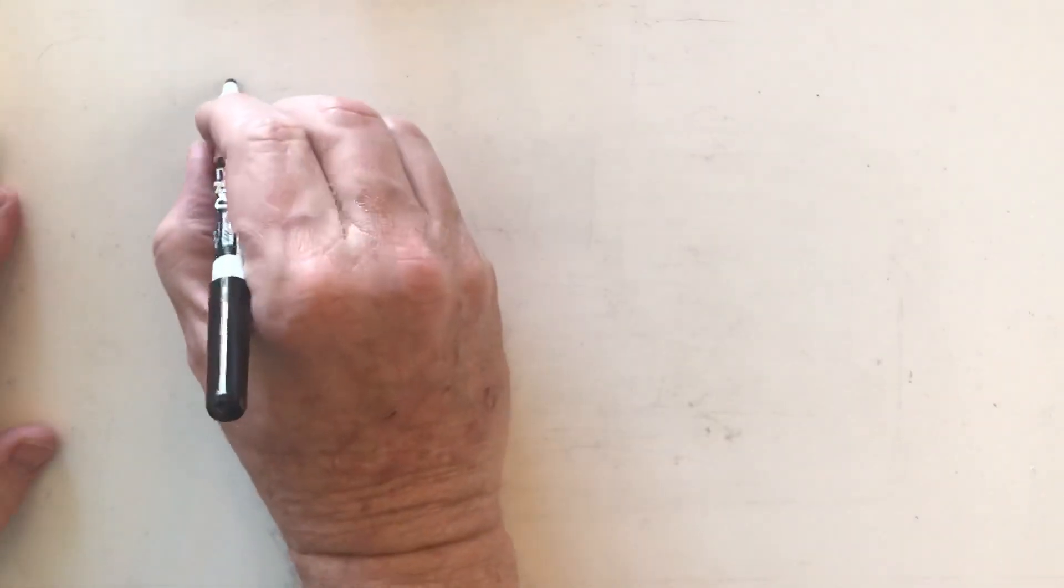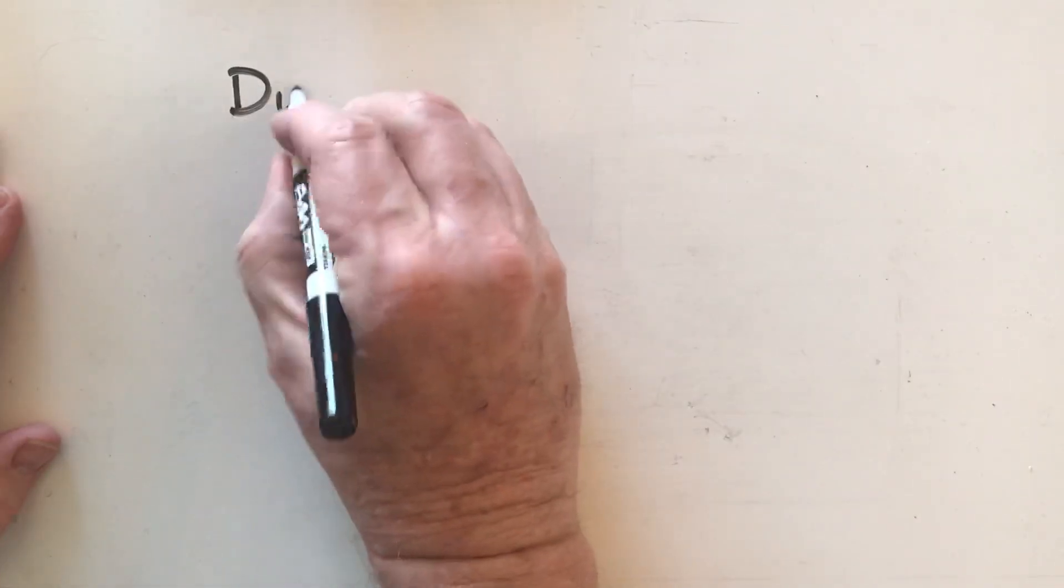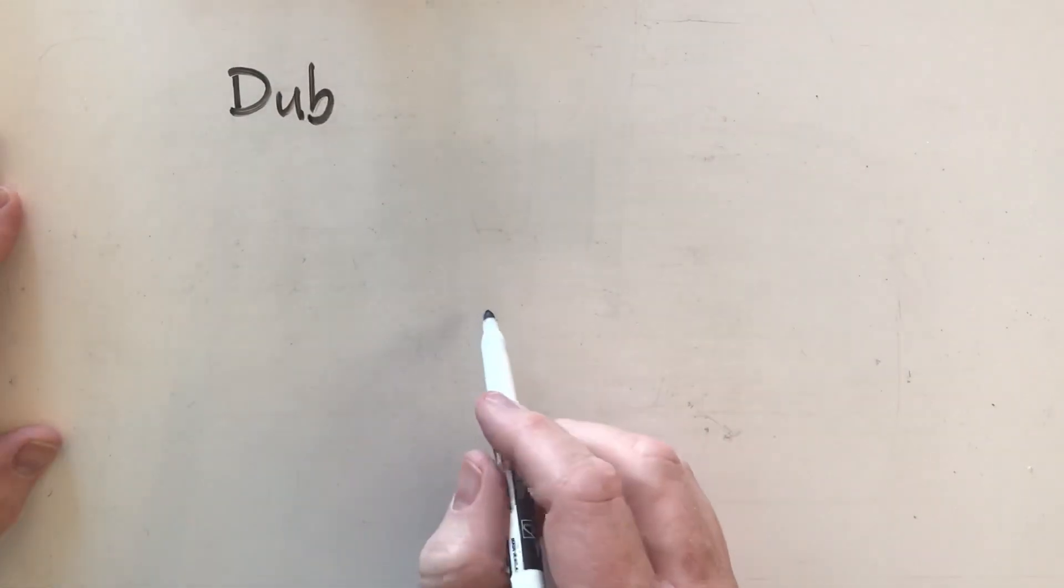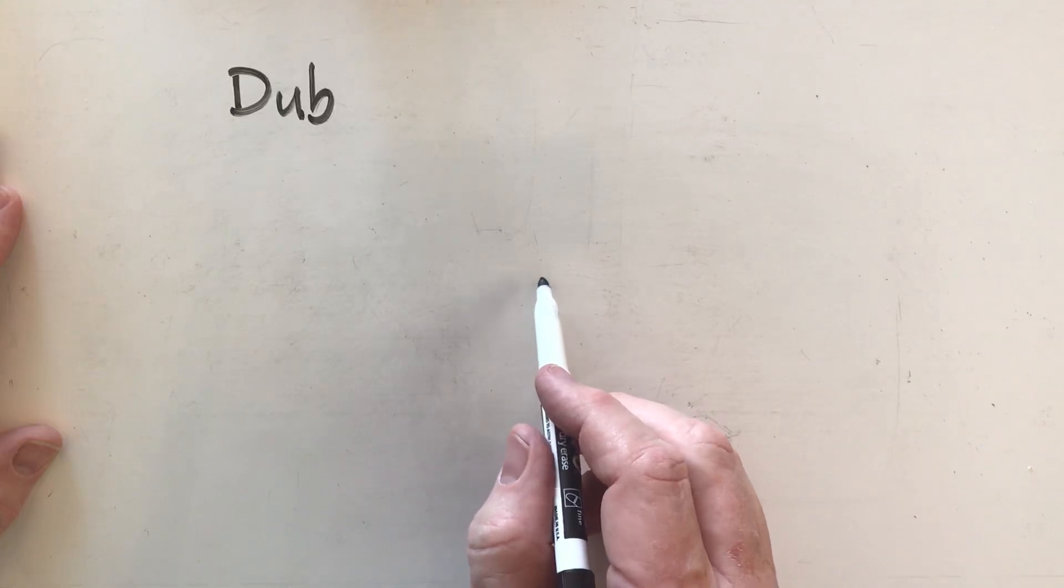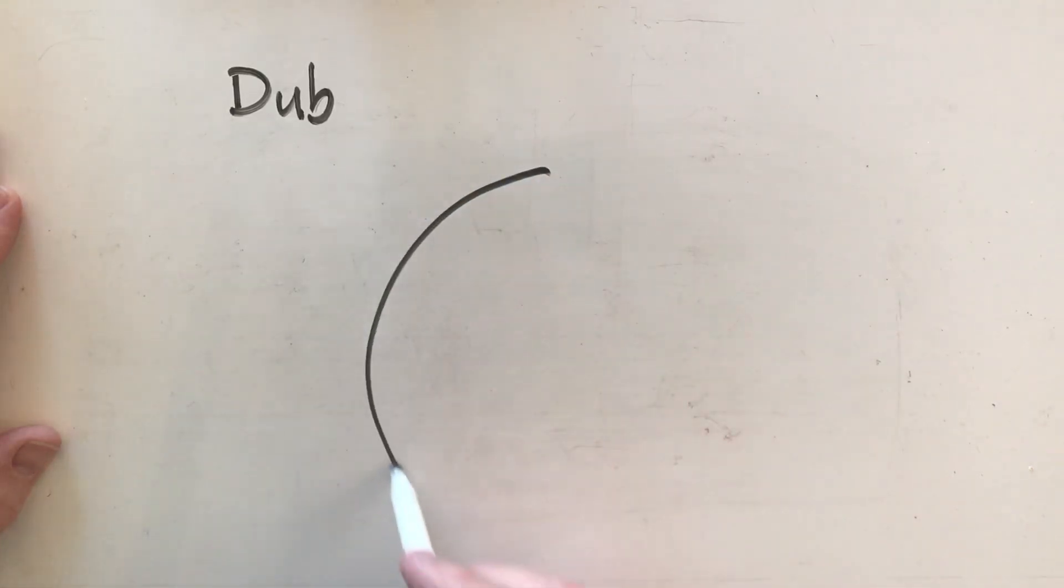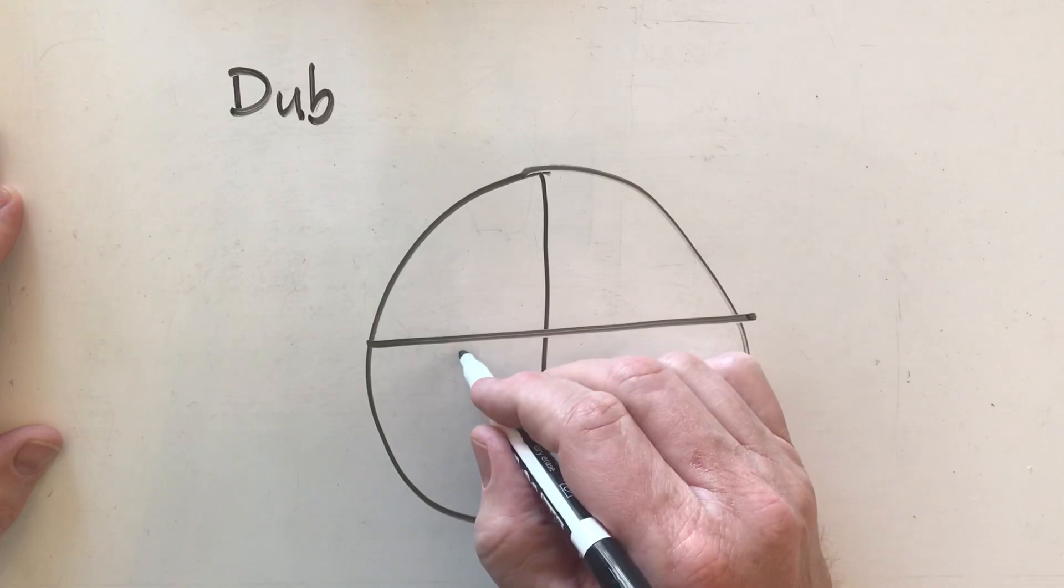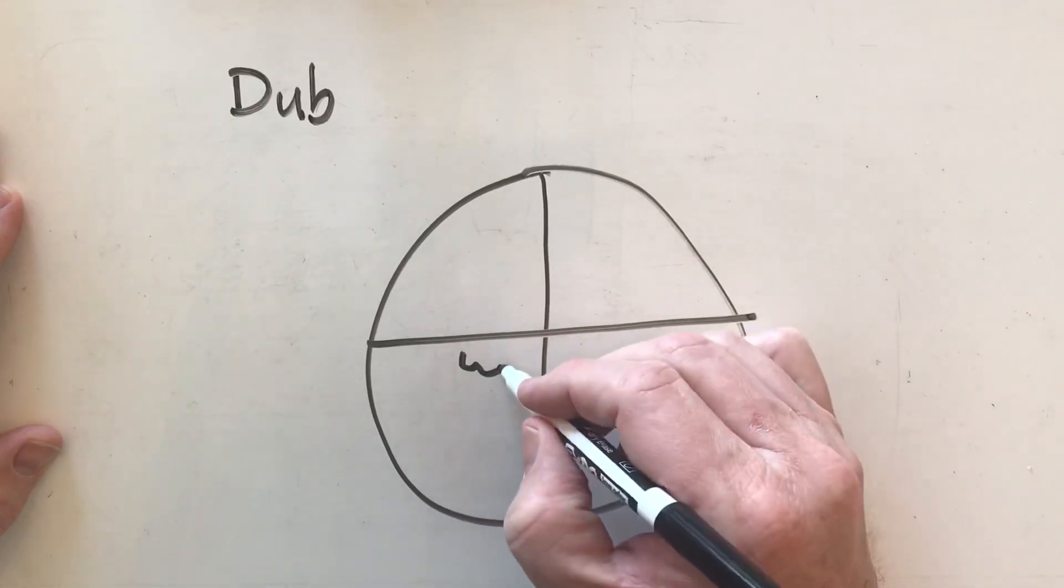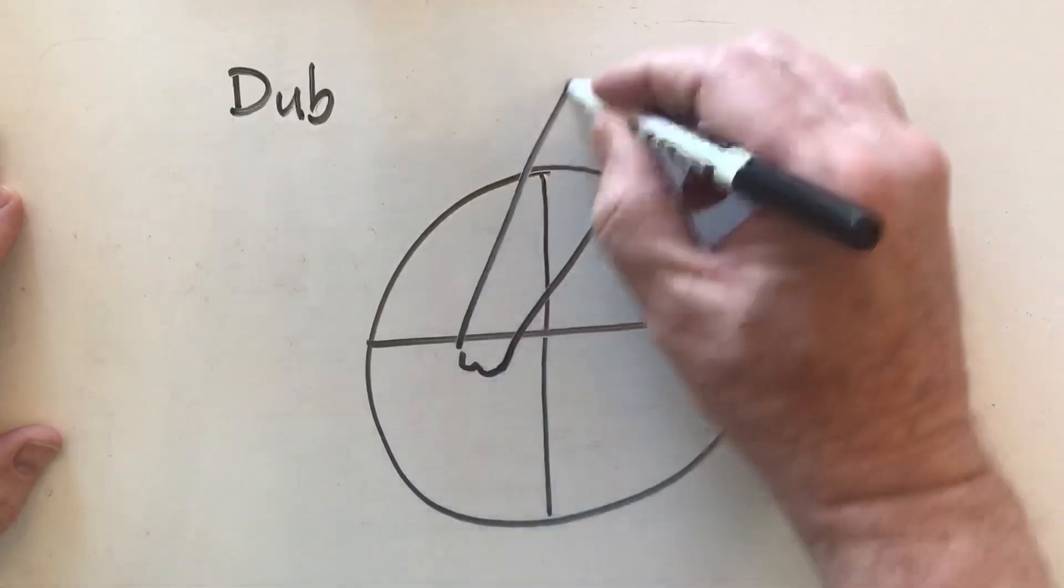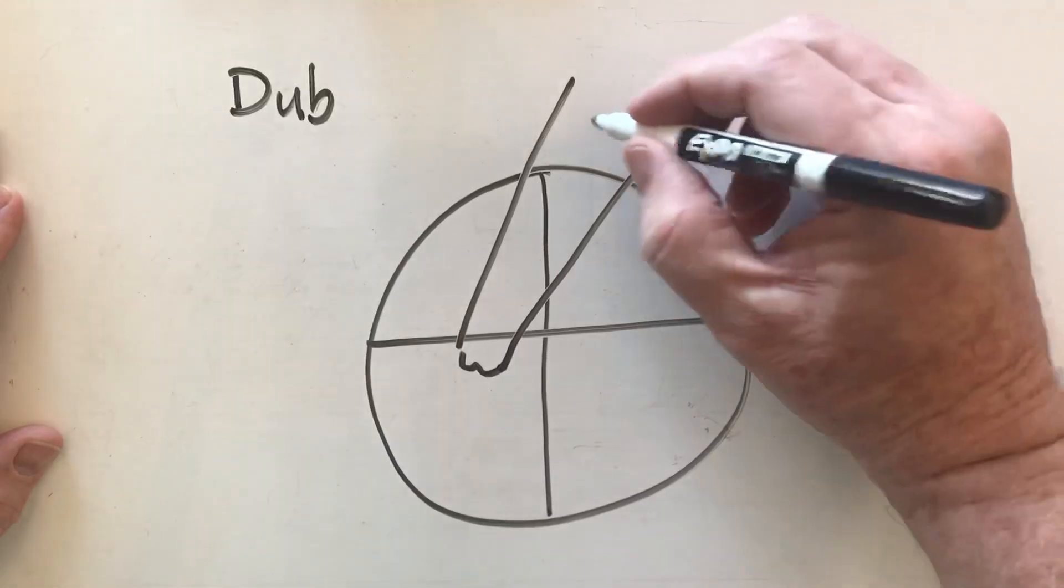So now, what about the dub sound? If you recall, we talked about the pulmonary valve and we talked about the aortic valve. And we said the pulmonary valve basically was part of the pulmonary artery. So this is my pulmonary artery.